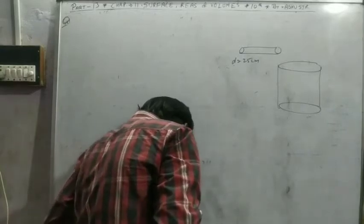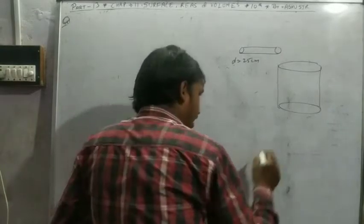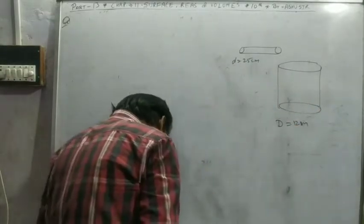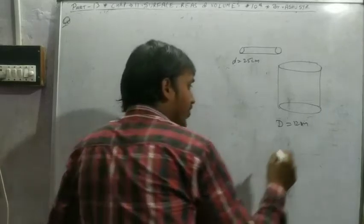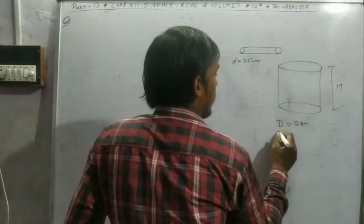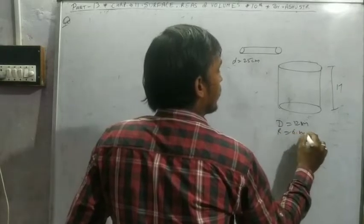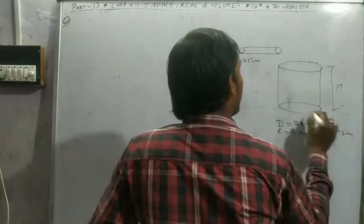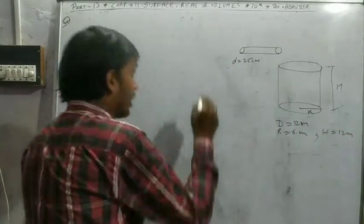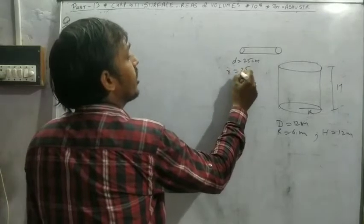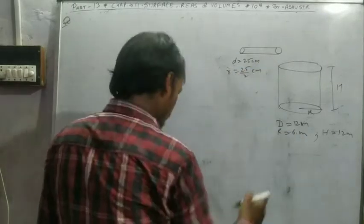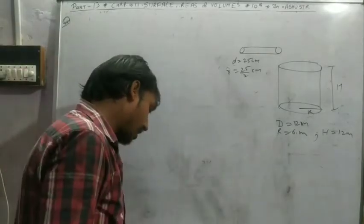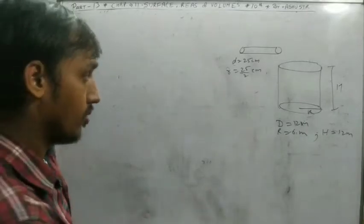The cylindrical tank has a diameter of 12 meters and depth of 2.5 meters deep. So the radius is 6 meters, height is 12 meters. And here the pipe radius is 25 by 2 centimeters. We need to convert centimeters to meters, so don't forget to take all values in the same units when solving.